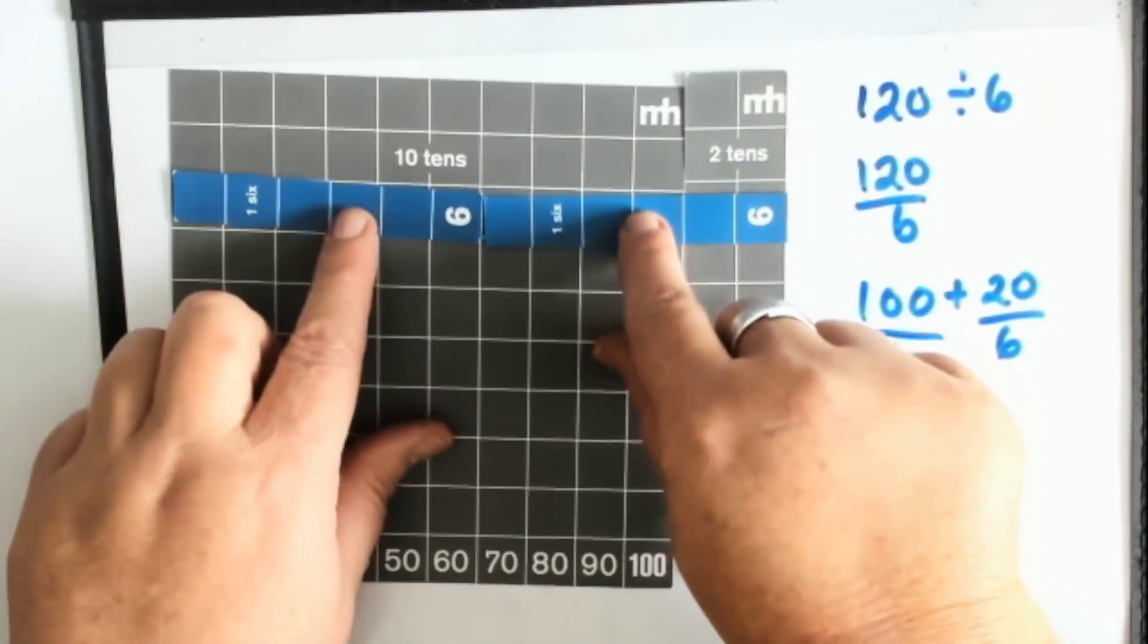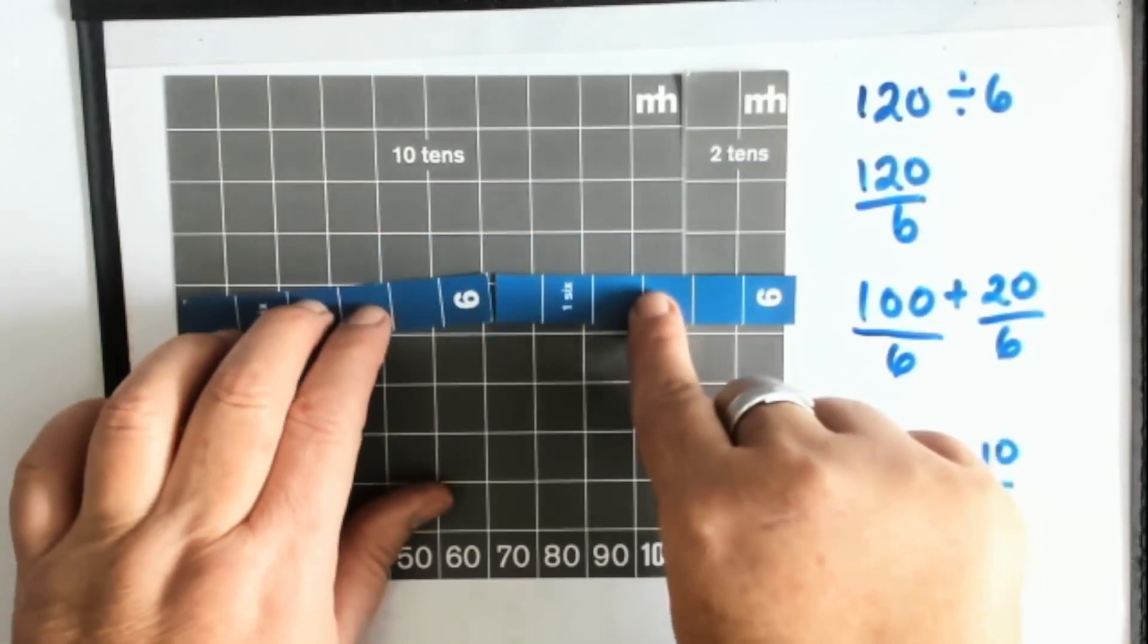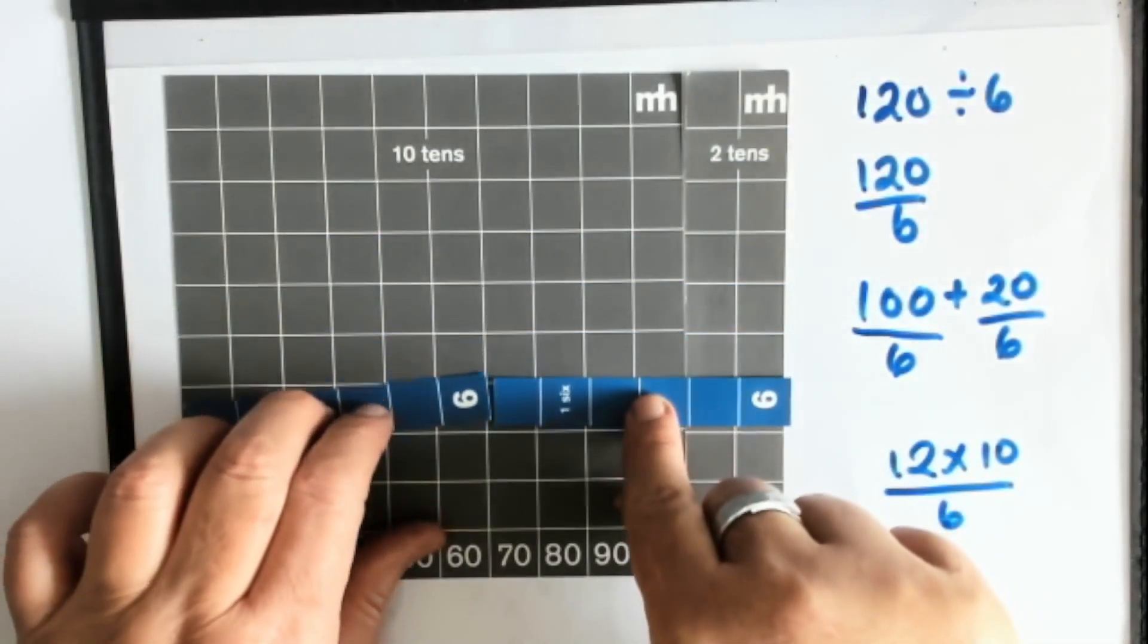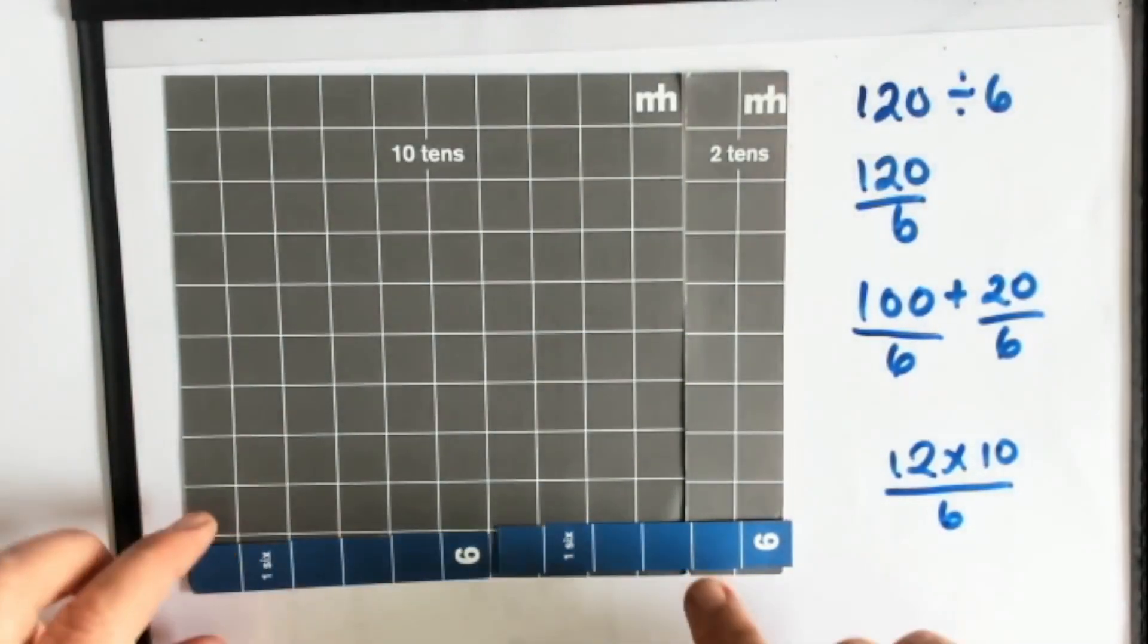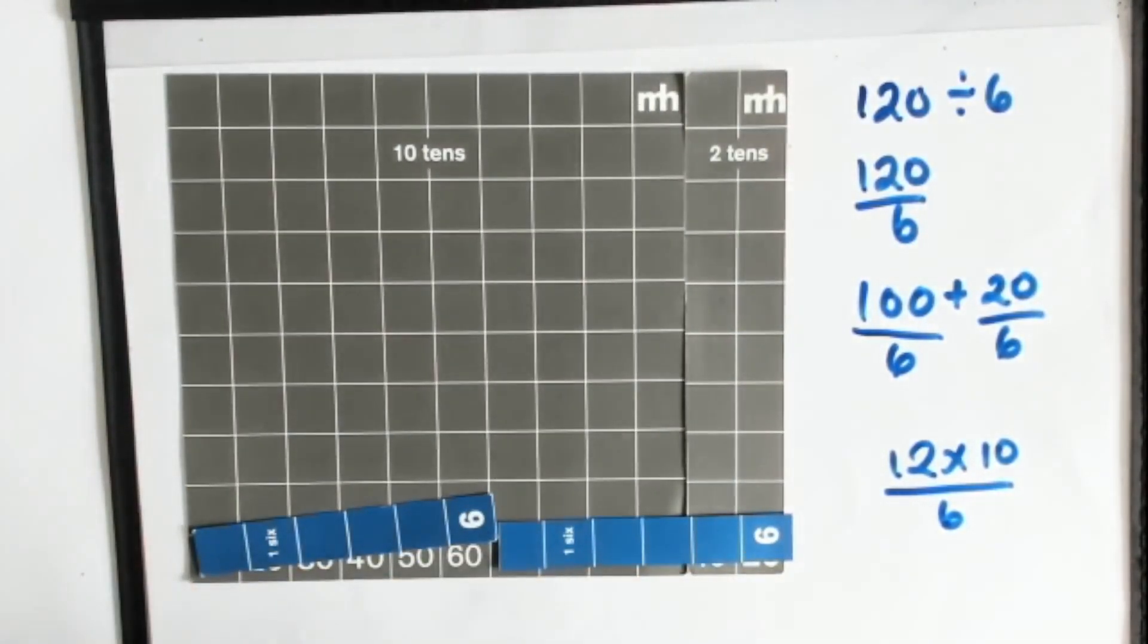So two, four, six, eight, ten, twelve, fourteen, sixteen, eighteen. I will fit that in twenty times. So this one piece will fit in twenty times.